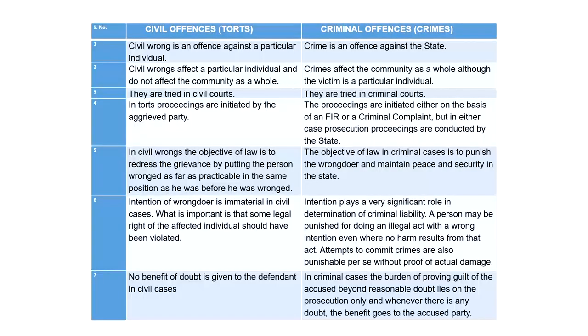In civil offenses, no benefit of doubt is given to the defendant. Whereas in criminal cases, the burden of proving guilt of the accused — and that too beyond reasonable doubt — lies on the prosecution only. Whenever there is any doubt, the benefit goes to the accused party, because there is a cardinal principle in criminal law: let 99 guilty men go free, but one innocent should not be punished. That is why the prosecution must prove the guilt of the accused beyond reasonable doubt. If there is even an iota of doubt in the minds of the court, the benefit of doubt will go to the accused person.